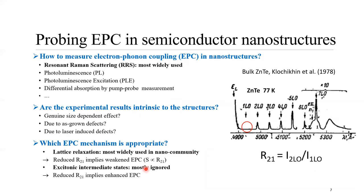Now, how do we probe electron-phonon coupling in semiconductor nanostructures? It cannot be measured directly, so we use different optical techniques. The most widely used technique is resonant Raman scattering. When you do resonant Raman scattering on ZnTe, you will see many replicas. But interestingly, you see the first-order overtone is almost zero. And now for many nanostructures, people have done similar measurements. The question is, are the results a genuinely size-dependent effect? The result could be due to something else — for instance, defects introduced during growth, or perhaps you just use too much laser power that induces defects.